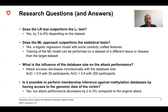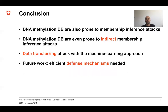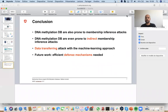Finally, we investigated whether it is possible to perform membership inference against methylation databases using only the genomic data of the victim. Yes, this is indeed possible, though attack performance decreases by two to five percent compared to the original setting. To conclude, DNA methylation databases are prone to membership inference attacks, even indirect ones using only the victim's genomic data, and data-transferring attacks are also possible with a machine learning approach. As future work, it will be crucial to design robust and efficient defense mechanisms.